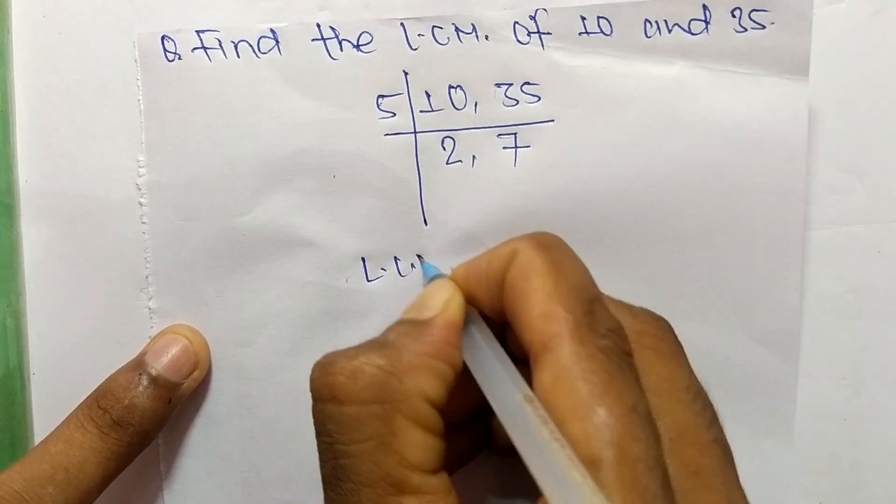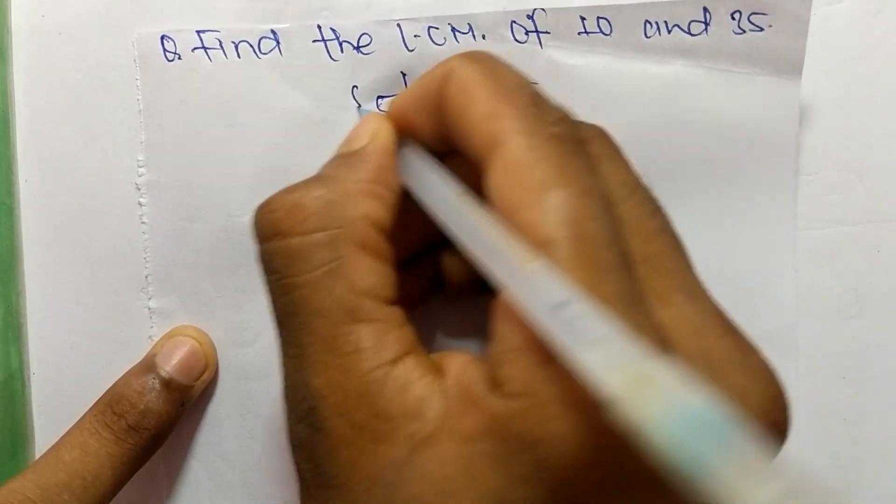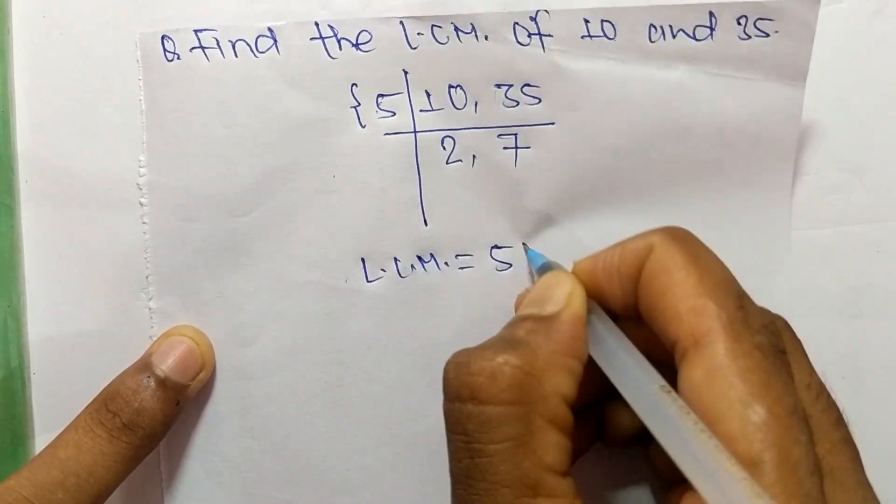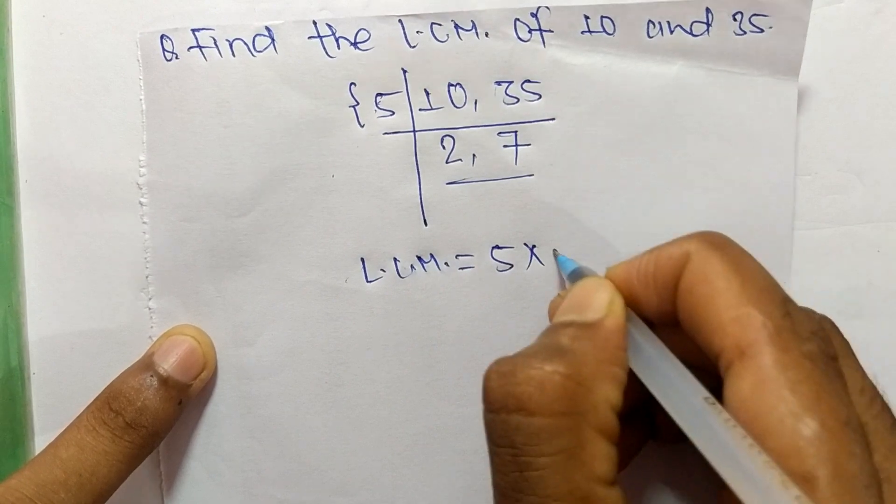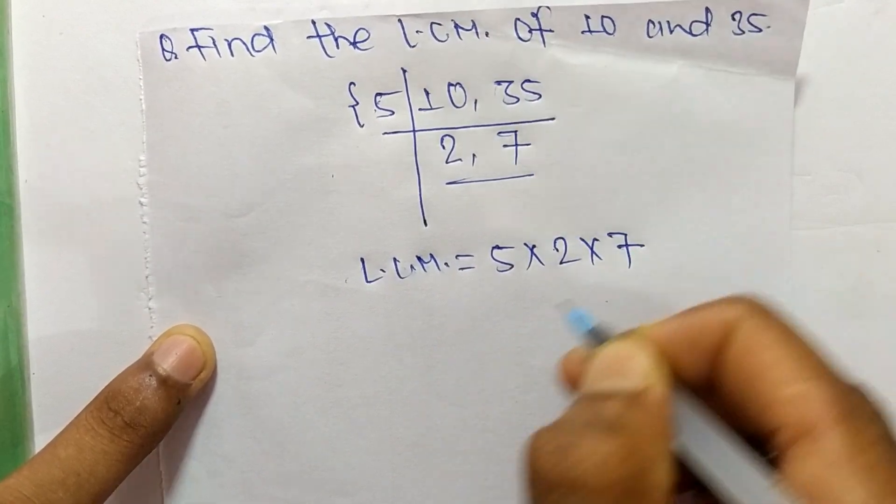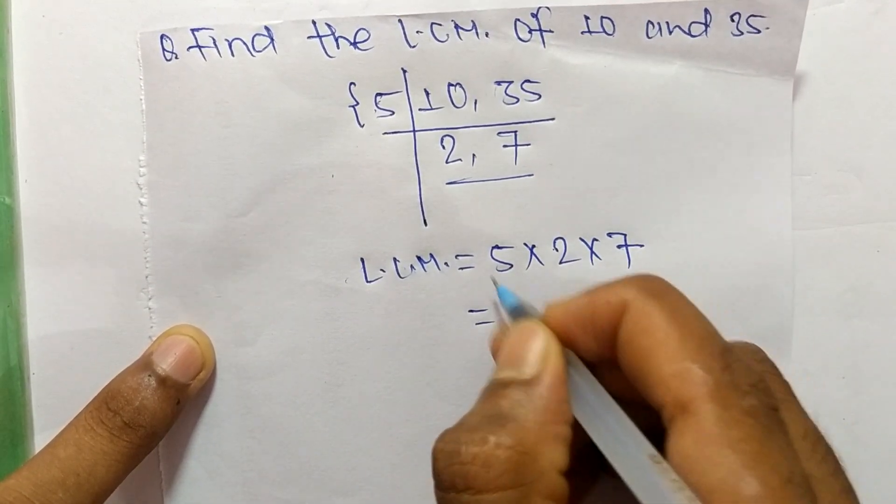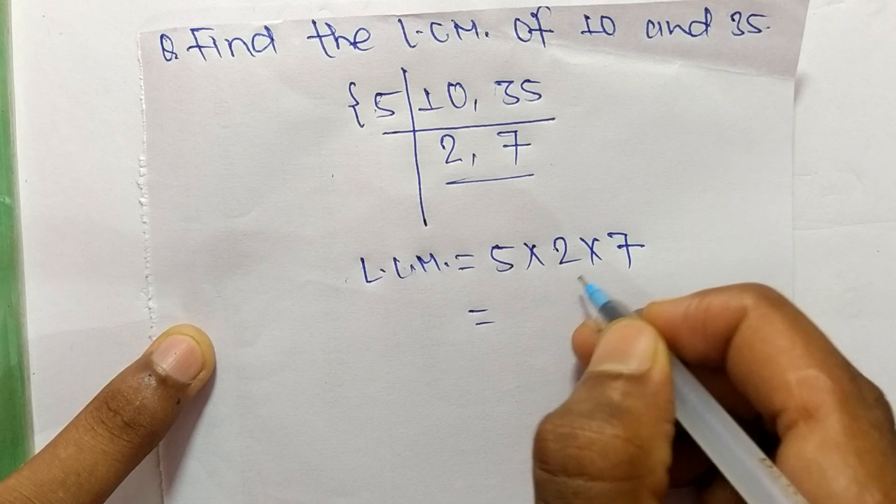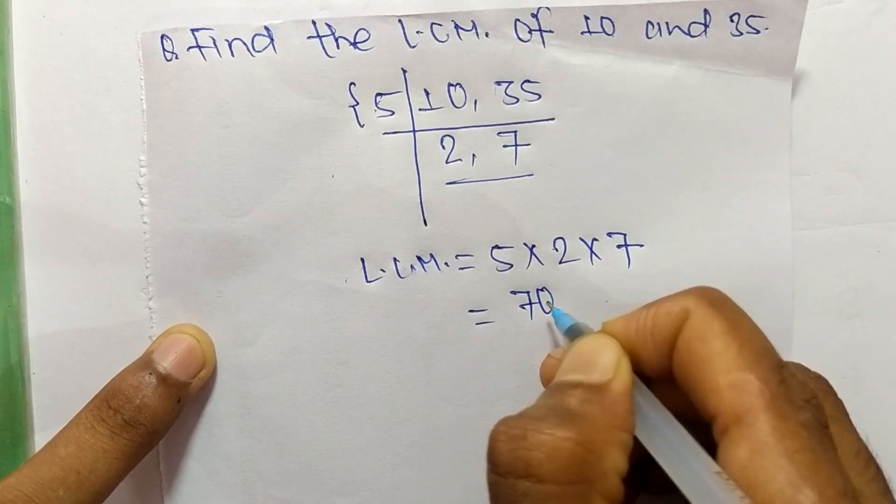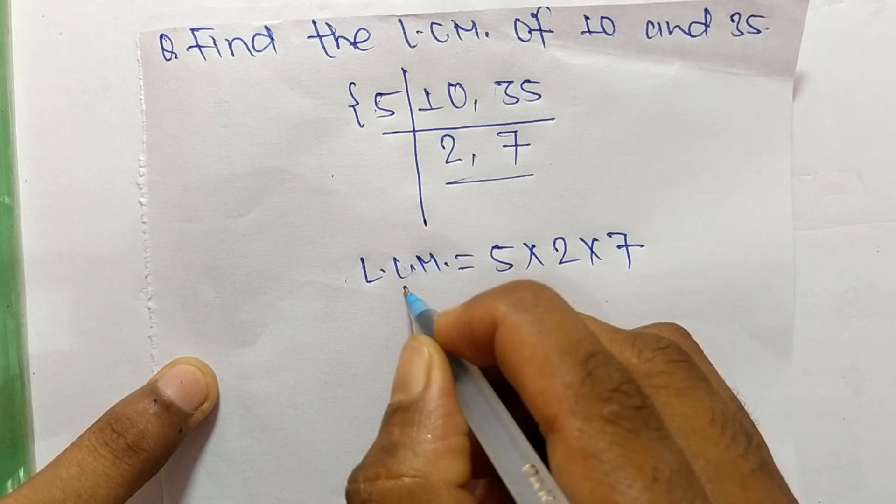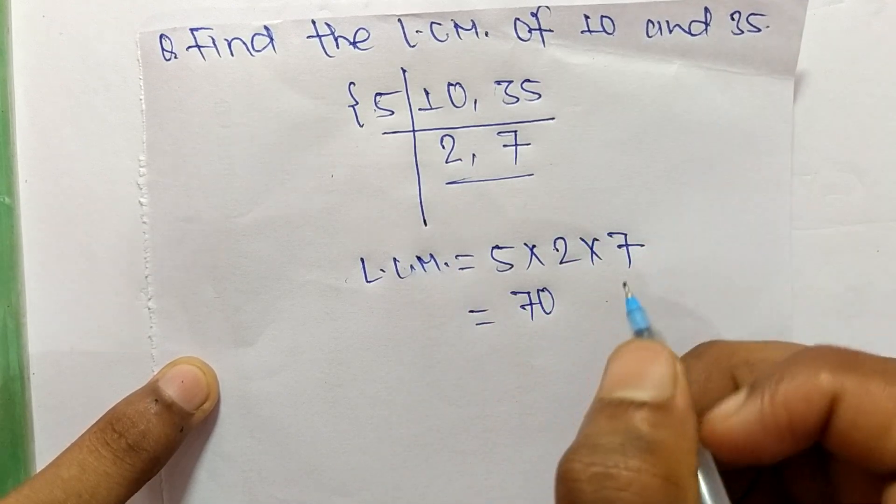So the LCM is equal to, from this part it is 5 and from this part it is 2 times 7. So 5 times 2 means 10 and 10 times 7 means it is 70. So 70 is the LCM of 10 and 35.